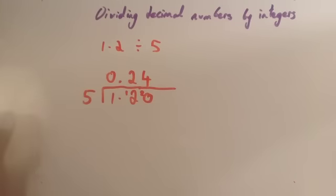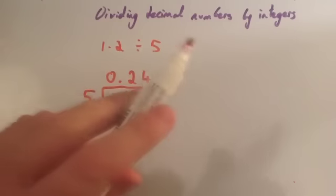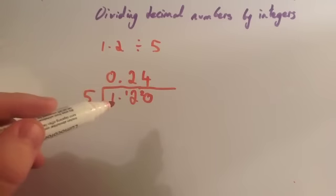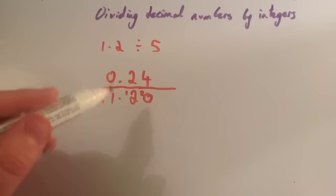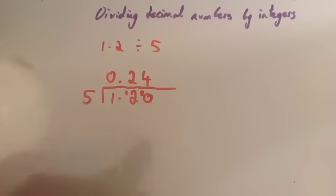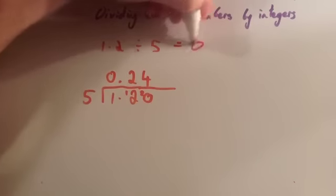Also, look at the video on division with remainders. Whenever you're dividing decimals by integers, the main thing is to remember to put the decimal point above where the decimal point is underneath the bus shelter. The answer is 0.24.